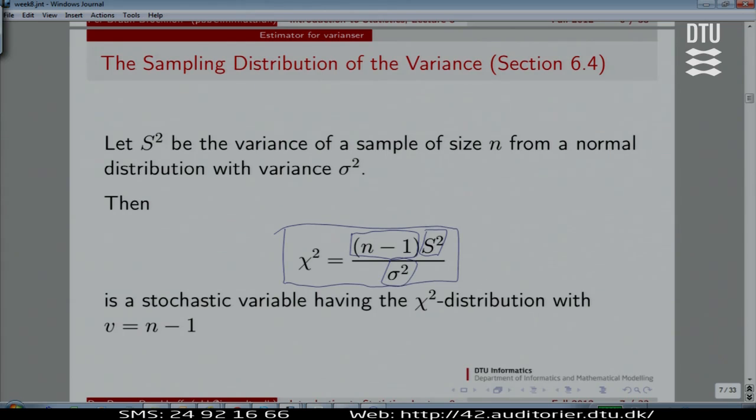If we take that number relative to the true variance, if we take the computed variance times n minus 1 relative to the true variance σ², which we don't know, but this is a theoretical result, such a statistic behaves exactly like a chi-square χ². That's the probability theoretical result that we can use to be intelligent when we do statistics.